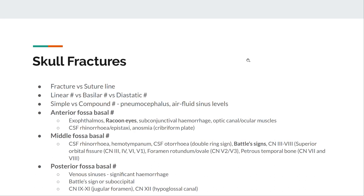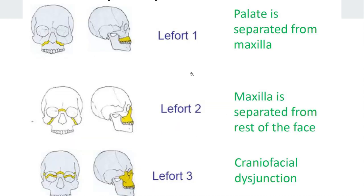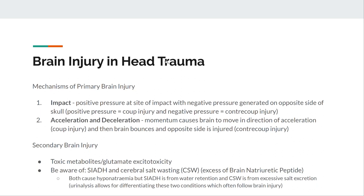Skull fractures: make sure you know the key features. Brain injury: be aware of coup and contrecoup injury — models include positive/negative pressure and acceleration/deceleration. Primary injury comes from the physical damage; secondary injury comes from metabolites and excitotoxicity from glutamate. For third year, be aware of SIADH and cerebral salt wasting as complications of head trauma.